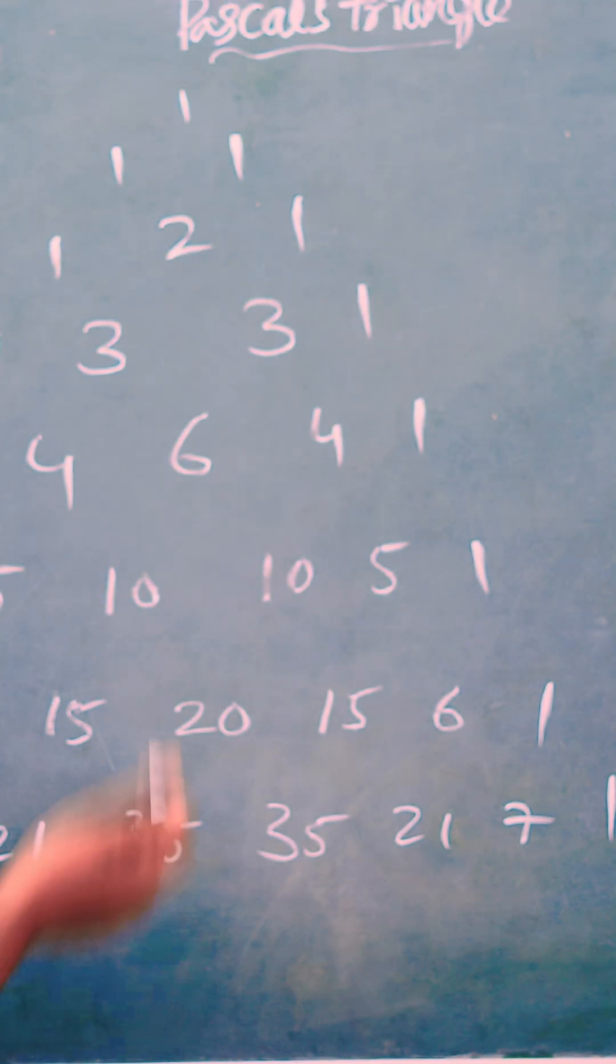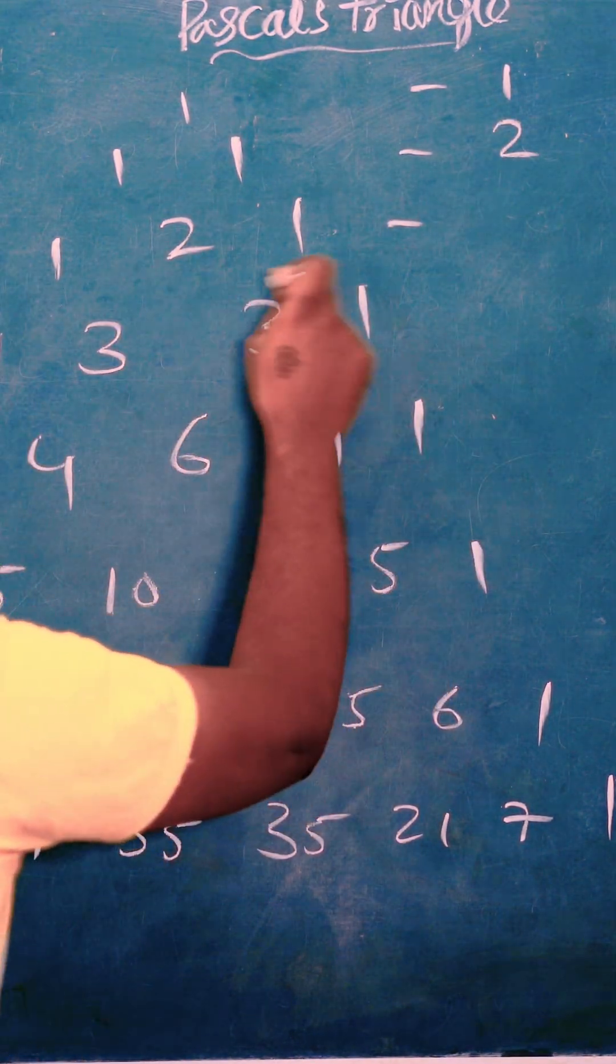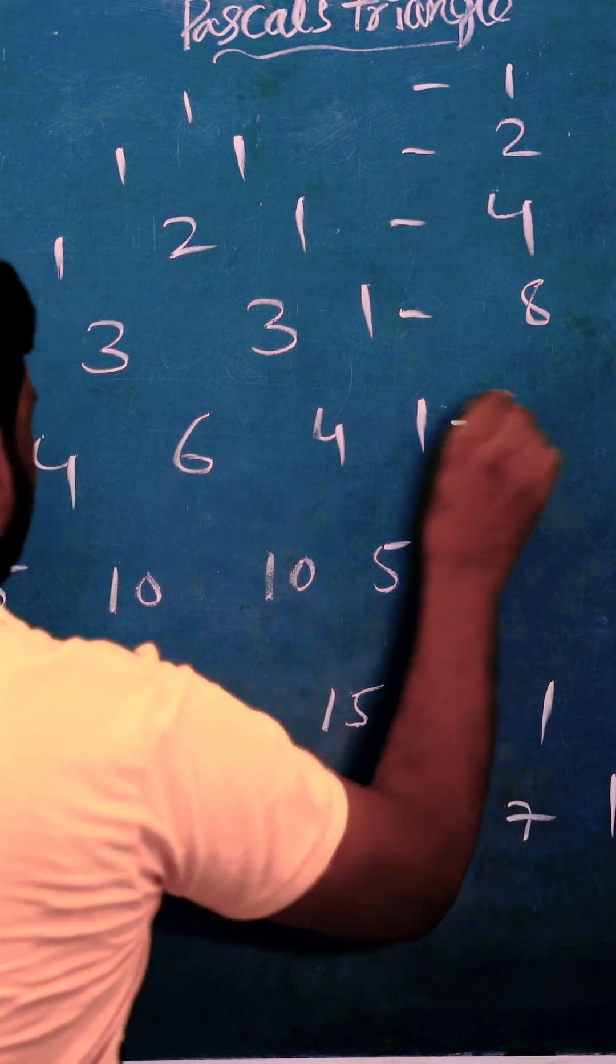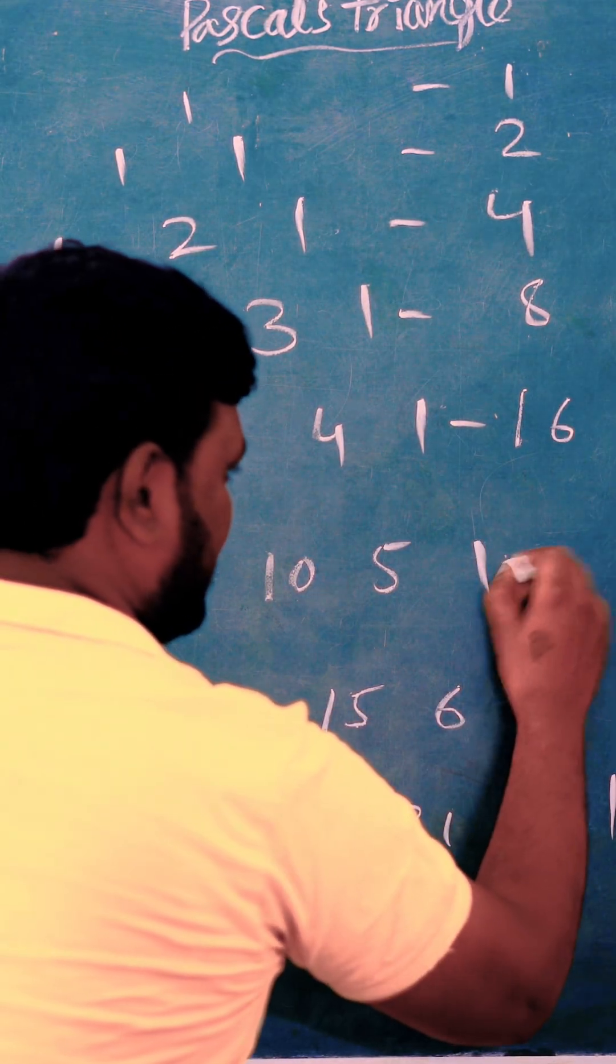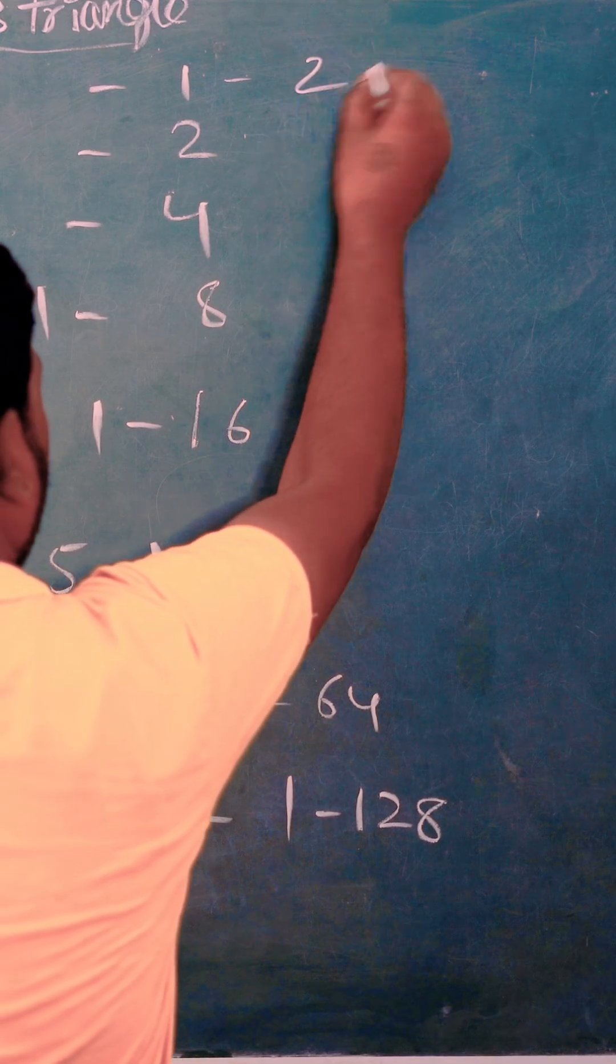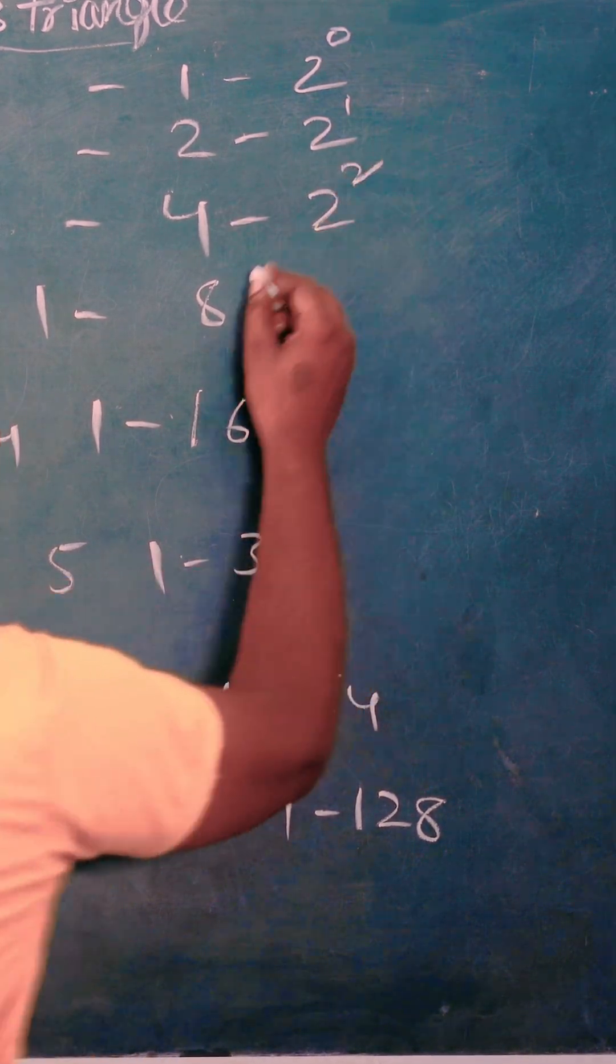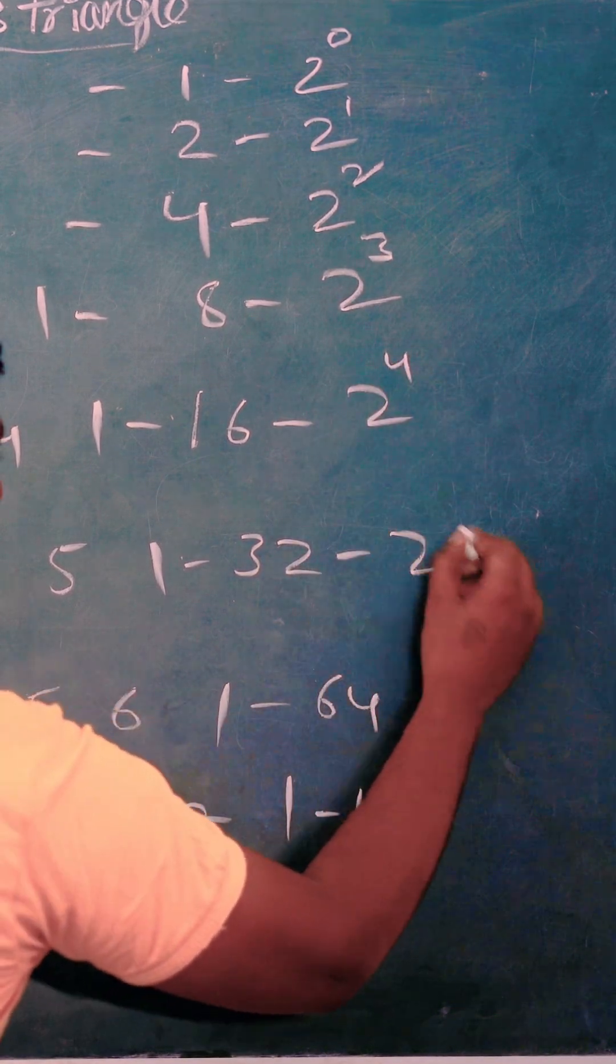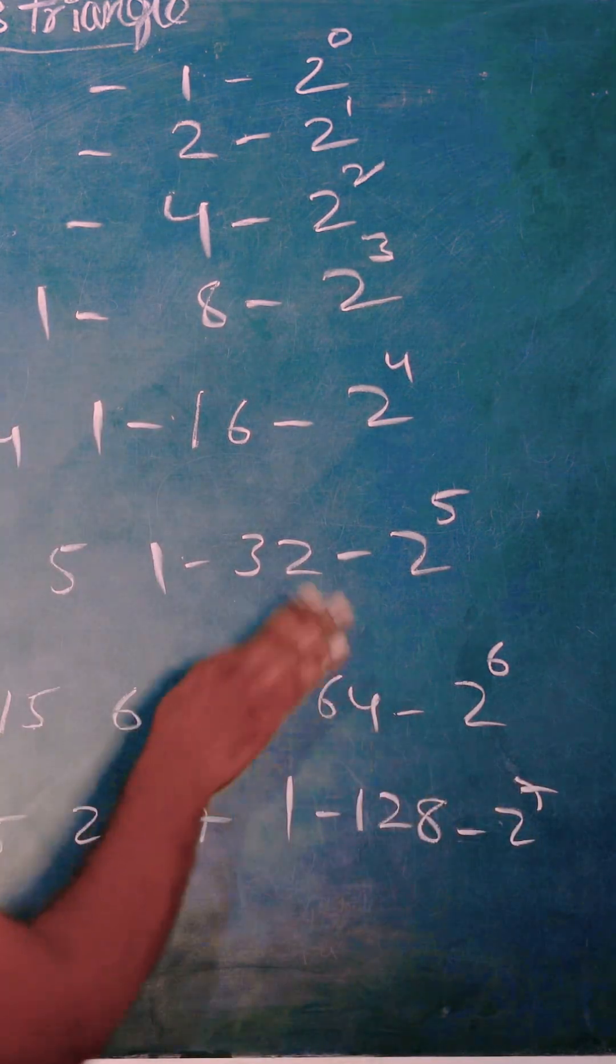In each row, sum is here only 1. Here 1 plus 1 is 2. Here 1 plus 2 plus 1 is 4. Here 1 plus 3 plus 3 plus 1 is 8. Here 1 plus 4 plus 6 plus 4 plus 1. Here 1 is 2 power 0. 2 is 2 power 1. 4 is 2 square. 8 is 2 cube. 16 is 2 power 4. 32 is 2 power 5. 64 is 2 power 6. 2 power 7.